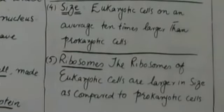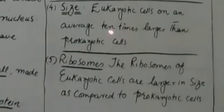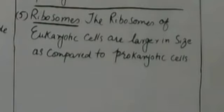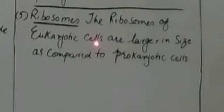The fourth difference is size. Eukaryotic cells are on average 10 times larger than prokaryotic cells. The ribosomes of eukaryotic cells are also larger than those of prokaryotic cells, because in eukaryotic cells they have to carry out large amounts of functions, such as the duplication and replication of chromosomes.